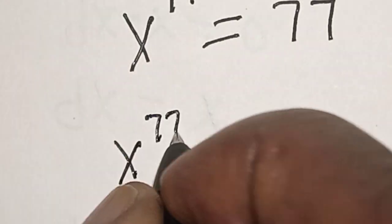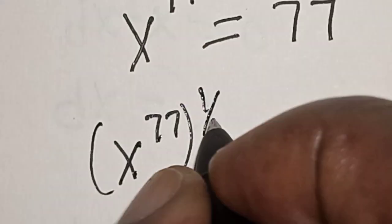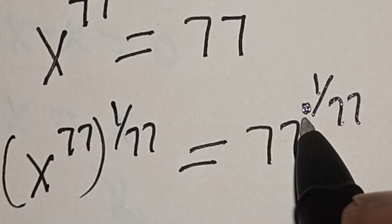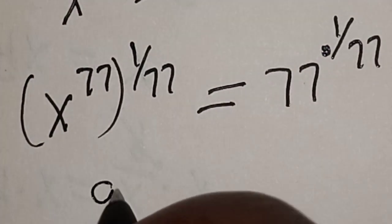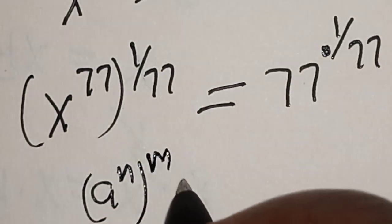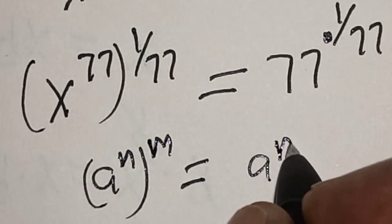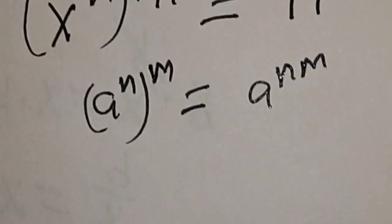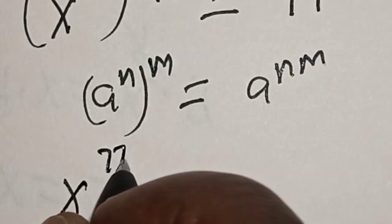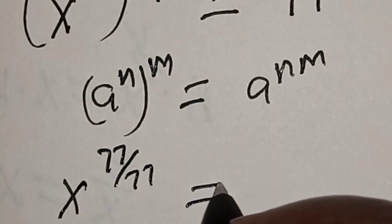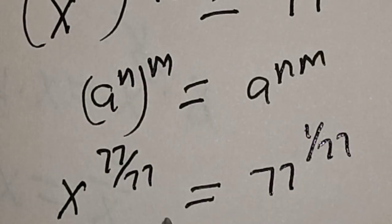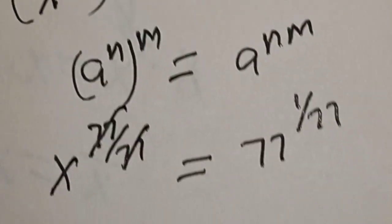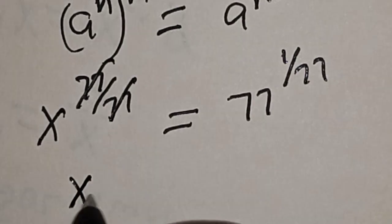Now raise both sides to the power of 1 over 77. Note that a raised to power n raised to power m is equal to a raised to power n times m. So x raised to power 77 times 1 over 77 is equal to 77 raised to power 1 over 77. The 77s cancel, therefore x is equal to 77 raised to power 1 over 77.